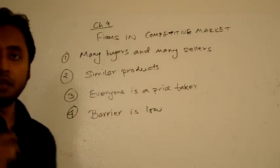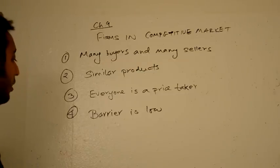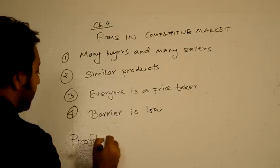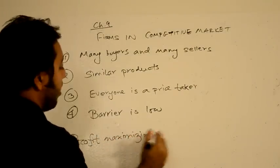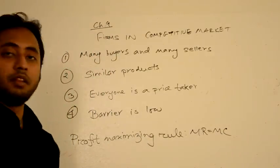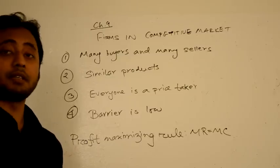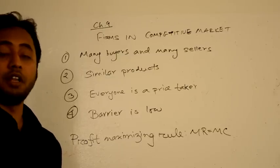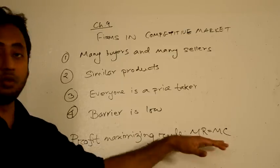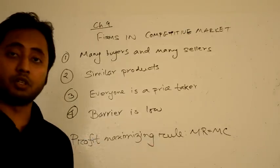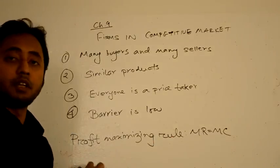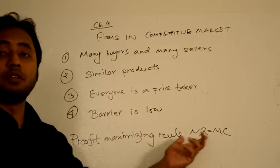If you remember from last week's discussion section, we effectively showed the profit maximizing rule: marginal revenue equals marginal cost. That means the quantity at which marginal revenue equals marginal cost is the optimal quantity — that quantity maximizes your profit. So the producer chooses the amount of output to produce on the basis of this rule.